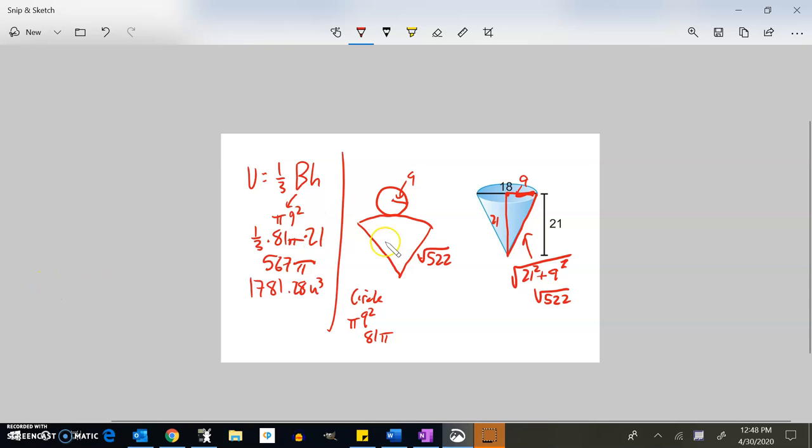And then remember, to find the area of this wedge, we can go pi times the radius times that side length. And if you're not sure why, look back to that video. 9 times pi times the square root of 522. So the surface area would be the area of the circle plus the area of the wedge. So that's that plus whatever this is. 9 times pi times root 522.